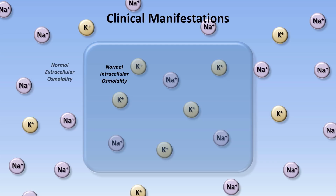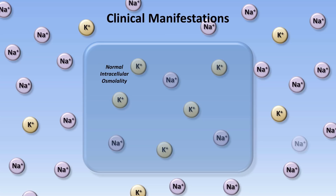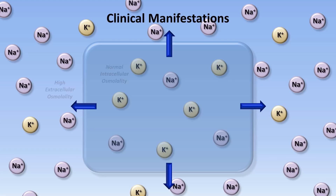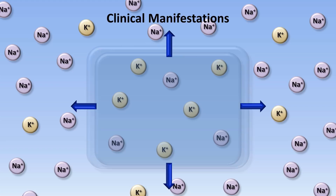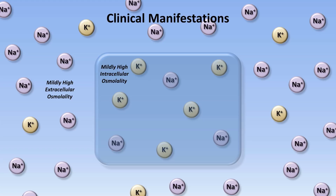What happens as the extracellular sodium concentration starts to rise? Now we have a high extracellular osmolality, but the intracellular osmolality is still normal. This osmotic gradient causes water to exit the cell and move to the extracellular space, which causes the cell to shrink. We now have equal intra- and extracellular osmolalities, and this action has somewhat blunted the development of worsened hypernatremia.